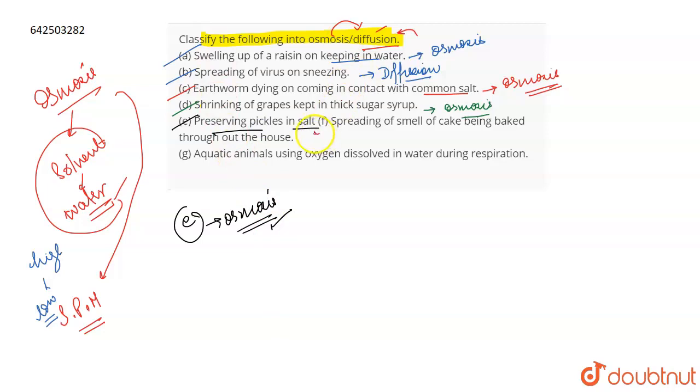The F part is spreading of smell of cake being baked through the house. This is an example of diffusion because no solvent which is water is responsible for this. That is why this process is diffusion.